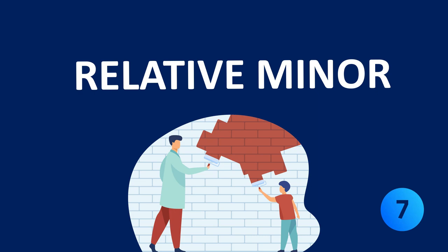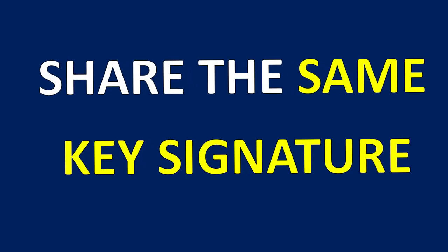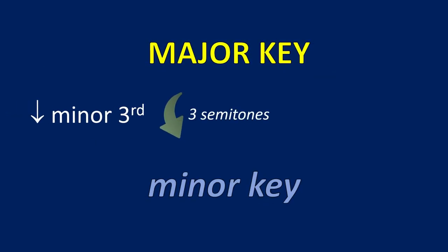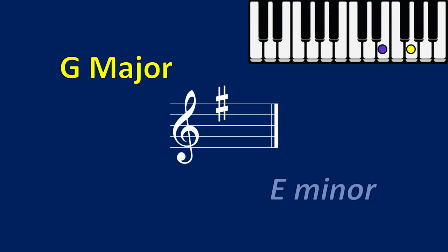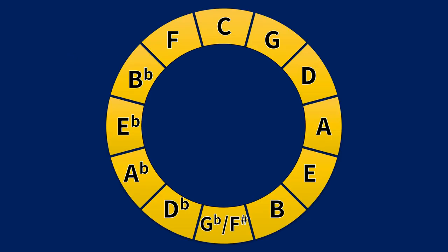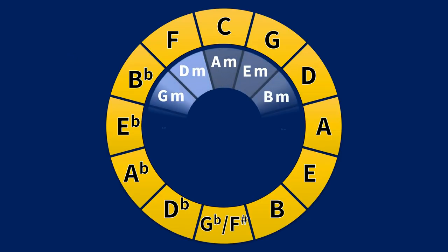Every major key has a relative minor key, meaning both keys share the same key signature. To find the relative minor of a major key, count a minor third — three semitones — down from the major key. To find the relative major of a minor key, reverse the process and count three semitones up. For example, C major's relative minor is A minor. G major's relative minor is E minor. Continuing this process produces an inner circle containing all the minor keys.